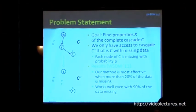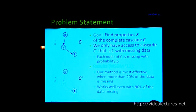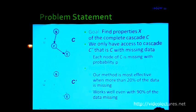It is possible to correct for the effects of missing data in cascades. You find some properties of the complete cascade C — depth, number of nodes, number of leaf nodes. Under the assumption that each node is missing uniformly at random with some small probability, the method becomes very effective when more than 20% of data is missing, and you can reconstruct cascades even when around 90% of the data is missing. You can use model-based techniques to connect disconnected pieces of cascades and reason about how the complete data would look.